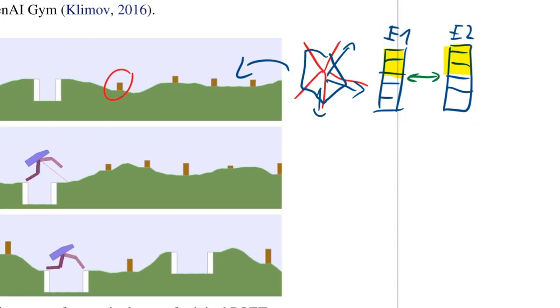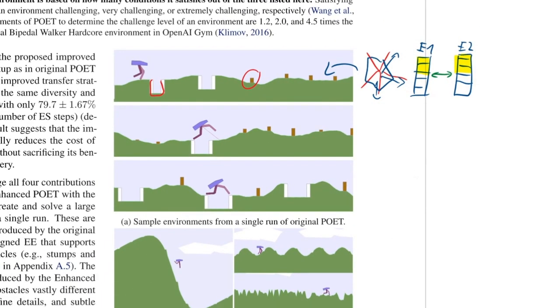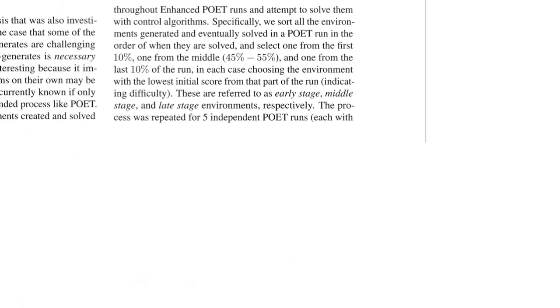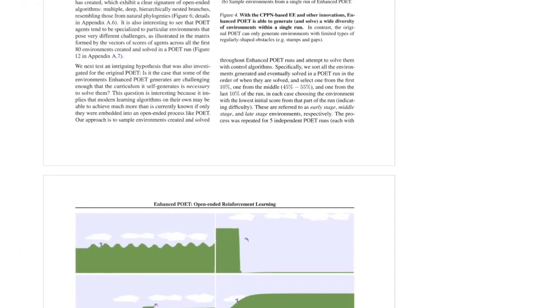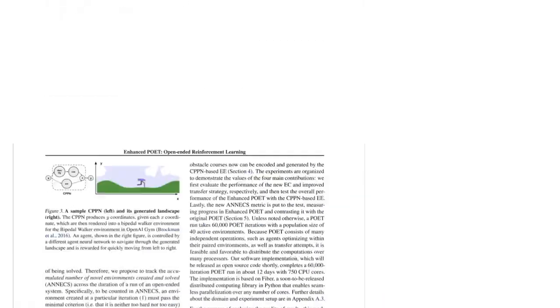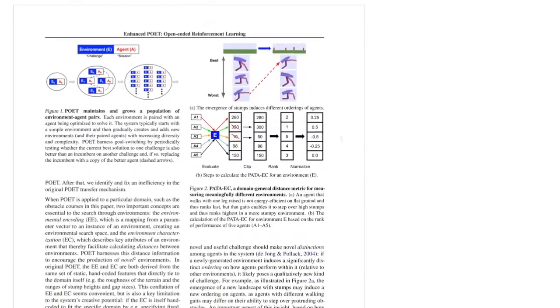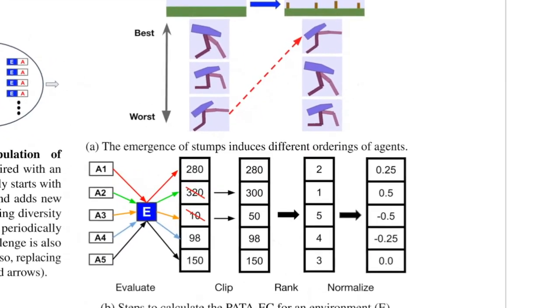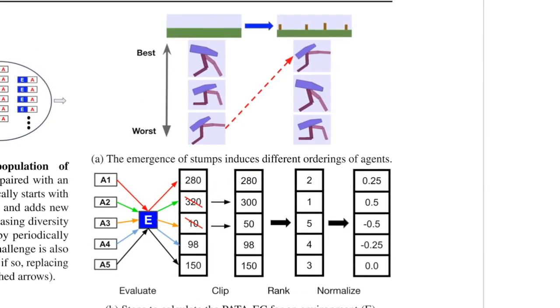And the authors here argue what we should rather do is have a general environment agnostic distance metric. So here is what they propose. Why don't we, if we have a new environment, measure all of the agents, the current agents and the ones we've already seen, on this new environment. That's this. And they come up with scores. Each of them gets a score.